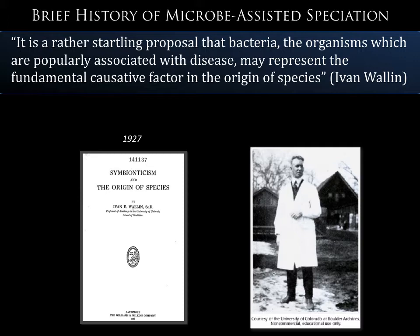It was Ivan Wallen who first made the connection based on these division traits. He writes something rather startling: bacteria popularly associated with disease may represent the fundamental causative factor in the origin of species. He bases that claim on discovering that there are bacteria inside eukaryotic cells, which he sees as serving as the primordial building blocks of evolutionary change.